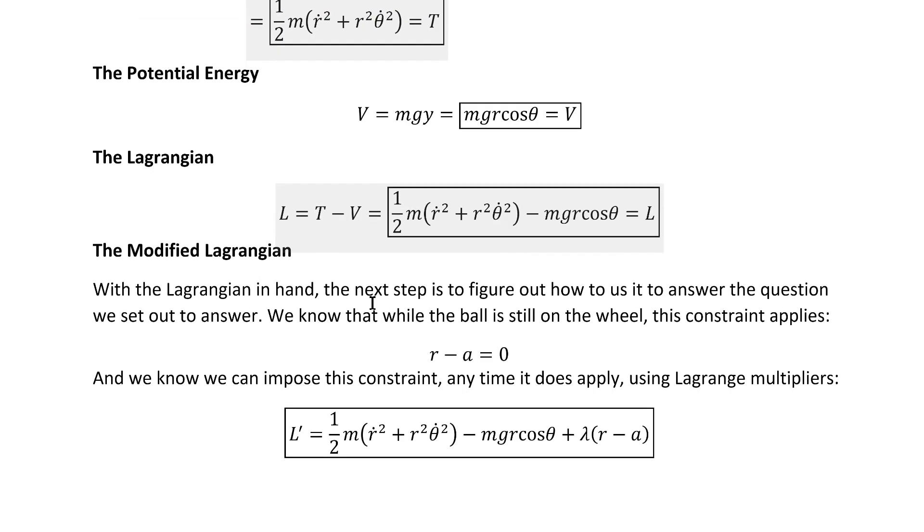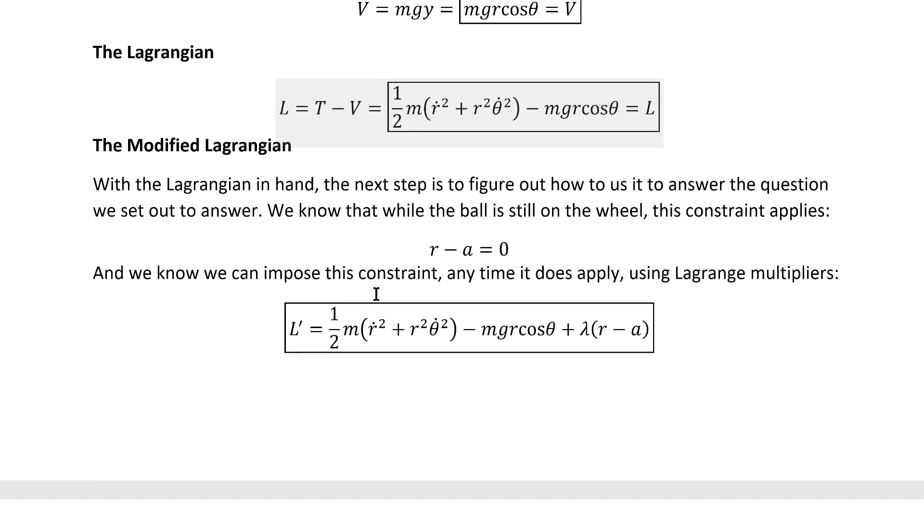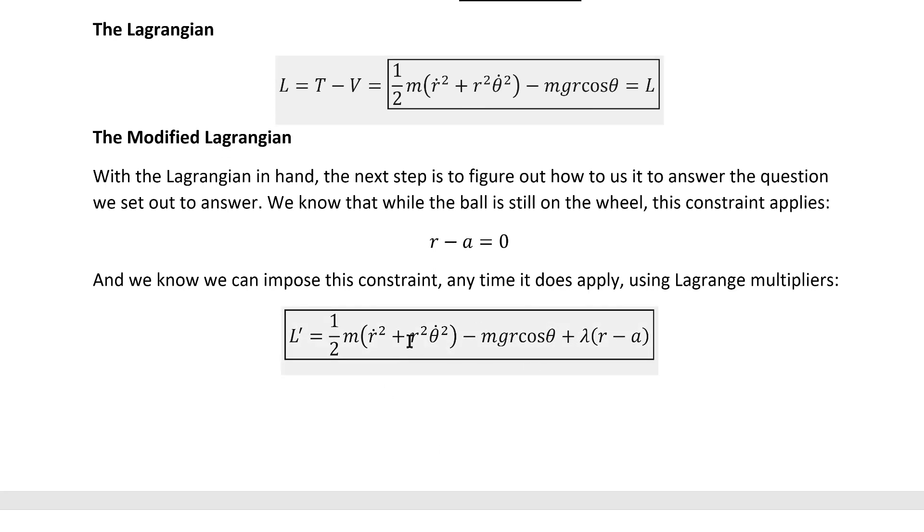With the Lagrangian in hand, the next step is to figure out how to use it to answer the question we set out to answer. We know that while the ball is still on the wheel, this constraint applies, and we know we can impose this constraint any time it does apply using Lagrange multipliers, leaving us with this modified Lagrangian.